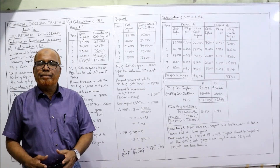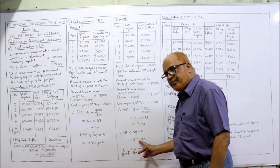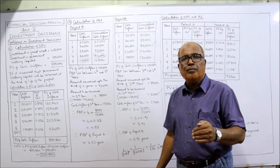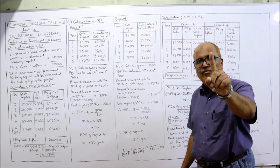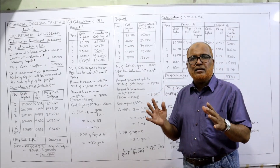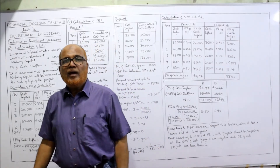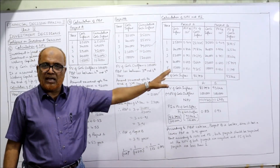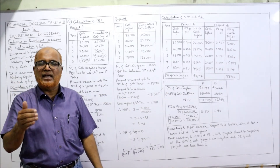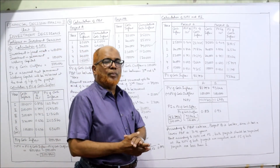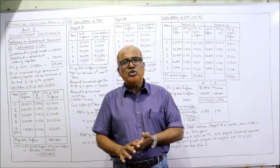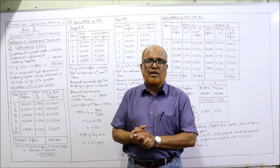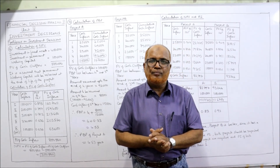According to payback period, the better project is project B: PBP of 3.91 years versus 4.53 years for project A. According to NPV and PI criteria, both projects are rejected since NPV of both is negative and PI of both is less than 1. In this video I explained problems six and seven. We'll continue with more problems in the next video. Please like, share, comment, subscribe, and support via super thanks.